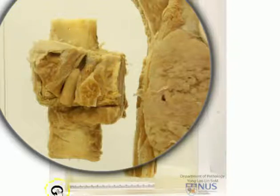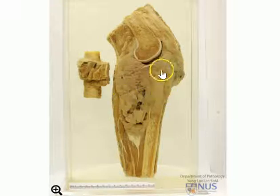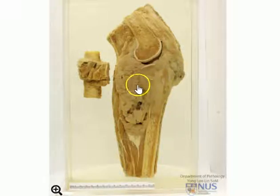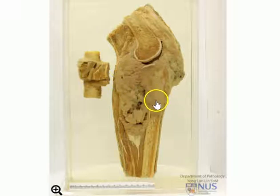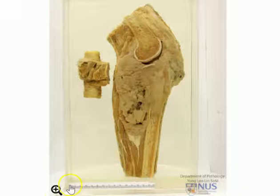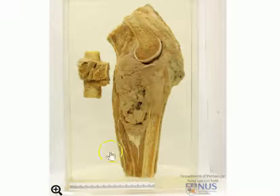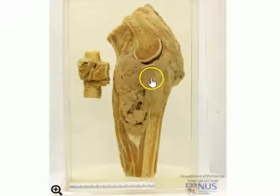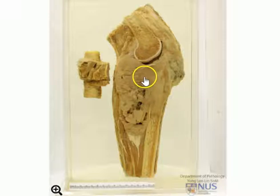So therefore, the diagnosis in this case: we can see a large fleshy tumour arising from the tibia extending into the soft tissue with a tumour thrombus, so it is clearly malignant. This would be osteosarcoma. Osteosarcoma is a malignant tumour of the bones. Often it involves the metaphysial region, and it actually rarely breaks through and invades the epiphysis, as it has done in this case.